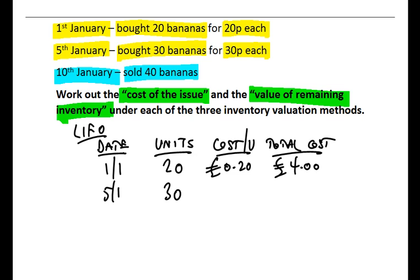5th of January, purchase another 30 bananas. That will take us to a total of 50 units, 50 actual bananas we've currently got. A slight increase in the price, remember, they're 30 pence per unit. And if you pay 30 pence each for 30 bananas, well, that's £9 total cost for that transaction.